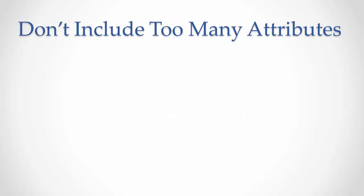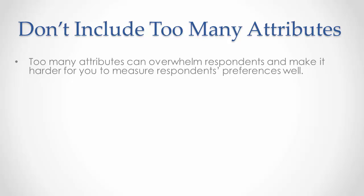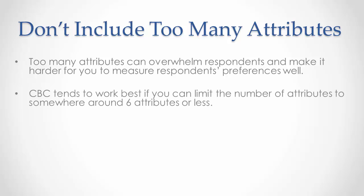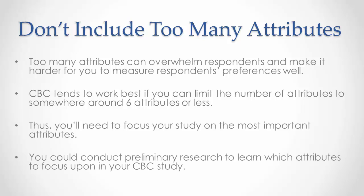Finally, we'll cover a few rules to follow when creating your attribute list for your conjoint analysis study. Number one, don't include too many attributes. They can overwhelm respondents and make it harder for you to measure respondents' preferences very well. CBC tends to work best if you can limit the number of attributes to somewhere around six attributes or less. Thus, you'll need to focus your study on the most important attributes. You could conduct preliminary research to learn which attributes to focus upon in your CBC study.